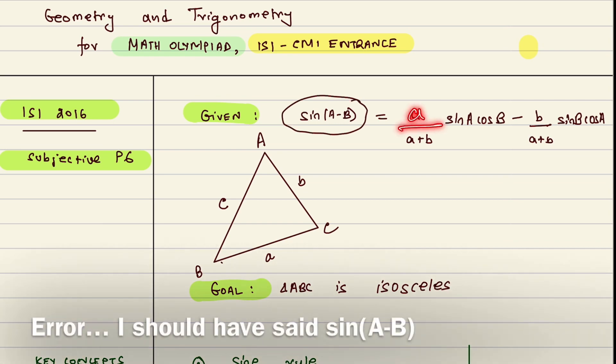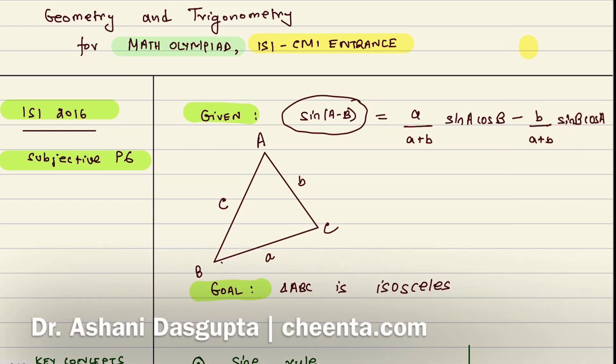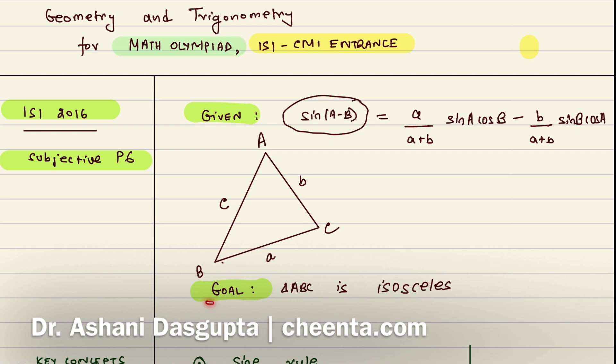And it's given that sin(A-B) = a/(a+b) × sinA cosB - b/(a+b) × sinB cosA. So this is the given data and we want to show that this triangle is isosceles. At this point I would ask you to pause the video and give it a try on your own because you can do some trigonometric simplification and get a simplified formula out of this expression.